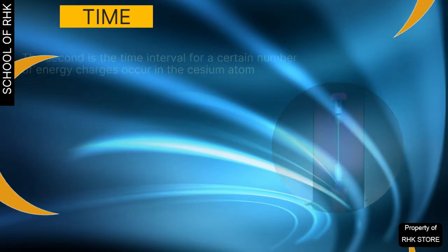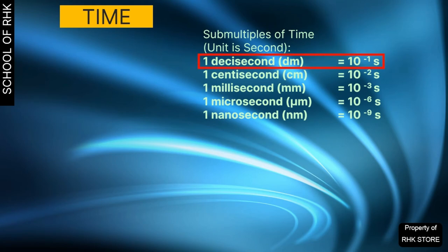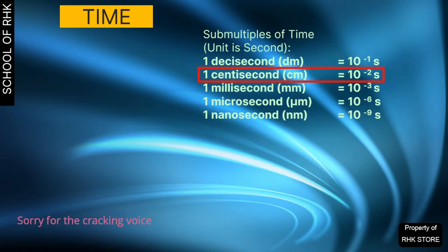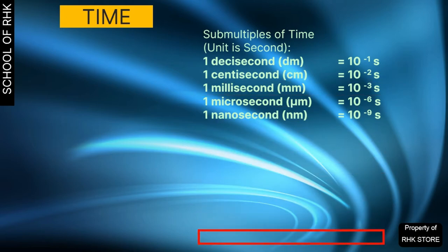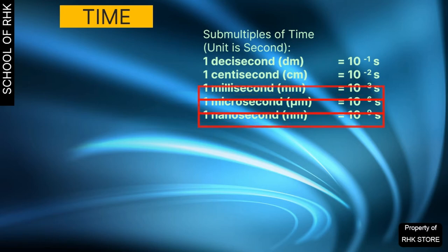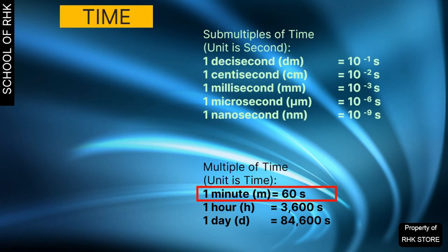Sub-multiples of time include: one decisecond equals 10 to the power of minus 1 second; one centisecond equals 10 to the power of minus 2 seconds; one millisecond equals 10 to the power of minus 3 seconds; one microsecond equals 10 to the power of minus 6 seconds; one nanosecond equals 10 to the power of minus 9 seconds. The most widely used sub-multiples are millisecond, microsecond, and nanosecond.